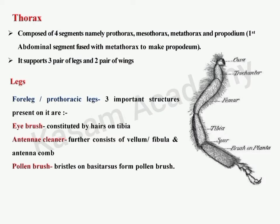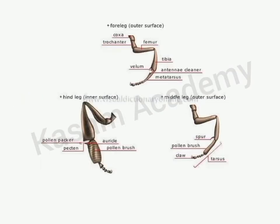The two pairs of wings are present on the mesothorax and metathorax. Unlike other insects, honeybees have very important structures in their legs with different functions. Like other insects, the leg parts in honeybees are coxa, trochanter, femur, tibia, and tarsus. The foreleg or prothoracic leg consists of three important structures: eye brush, antennal cleaner, and pollen brush.